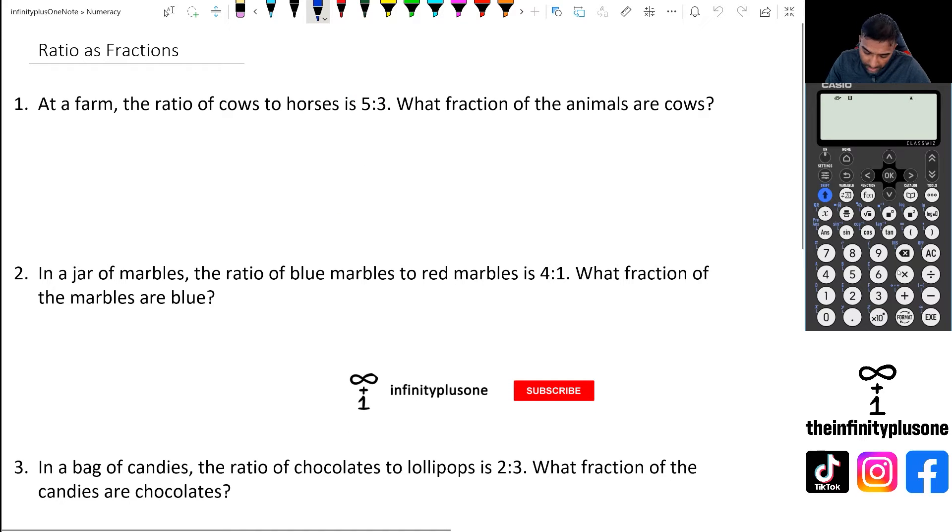All right, so having a look at the first question here: at a farm the ratio of cows to horses is 5:3. What fraction of the animals are cows? So if you think about it like this, all together we've actually got eight animals. Well, the ratio is eight, so out of eight of them, five of them tend to be cows. So all we're going to do is we're going to say cows is going to be 5 out of 8.